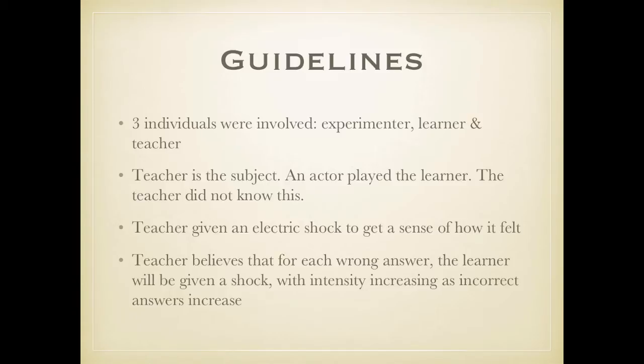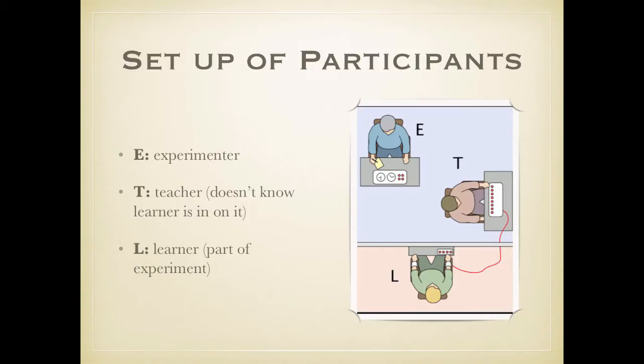So here's how things were set up. E is the experimenter, the person who's overseeing the whole thing. T is the teacher, the subject of the experiment, the person who came in off the street. And then L is your learner, positioned behind the wall. So the teacher never can see the learner after the shocks begin to be administered. The teacher has met the learner briefly in the hall where there was the assignment of roles, so he does have a visual of what this person looks like.